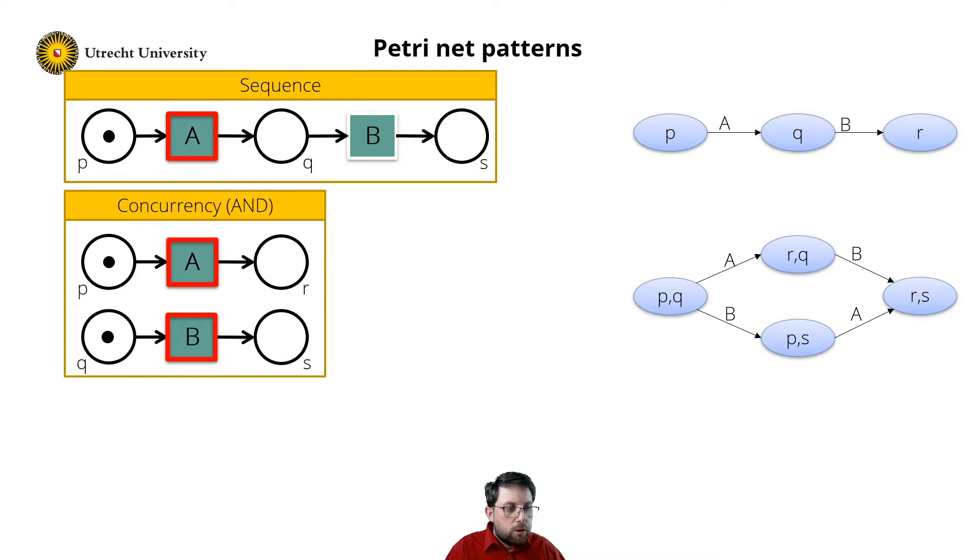In the labelled transition system, concurrent transitions are recognized by this diamond shape that we see over here. Whether you first execute A and then B, or first B and then A, you end up in the same state.